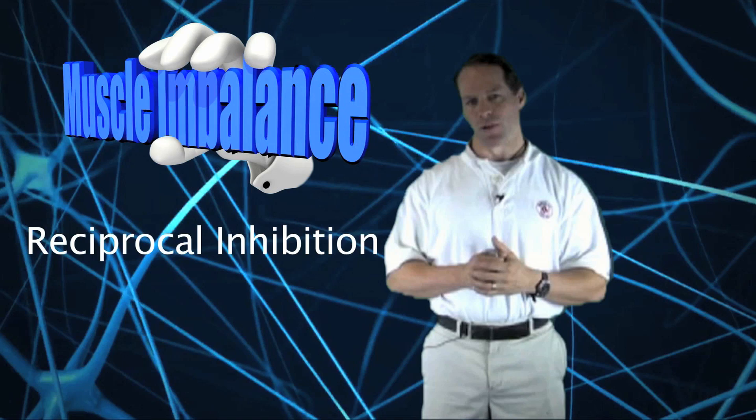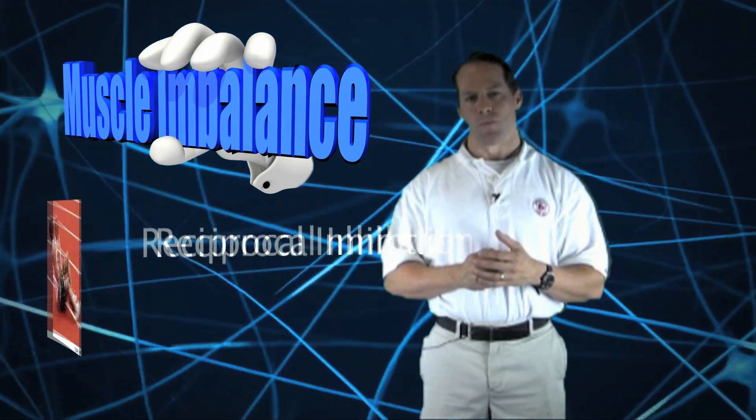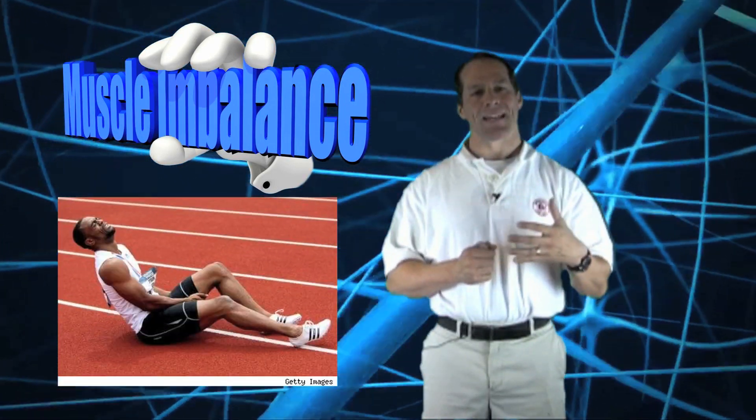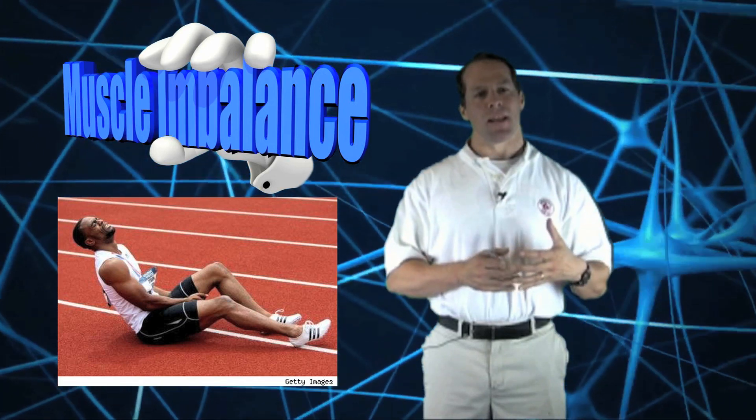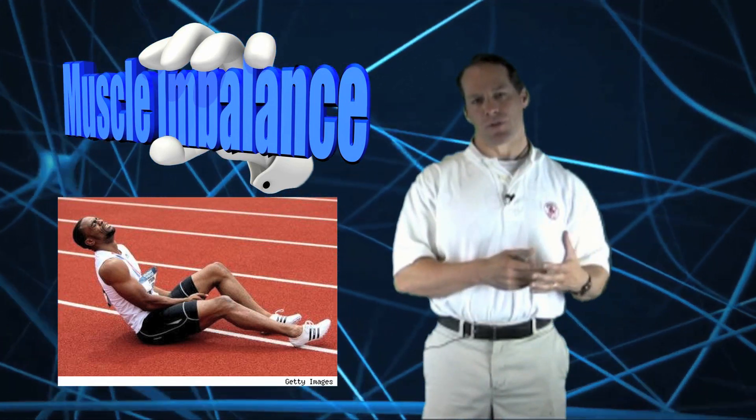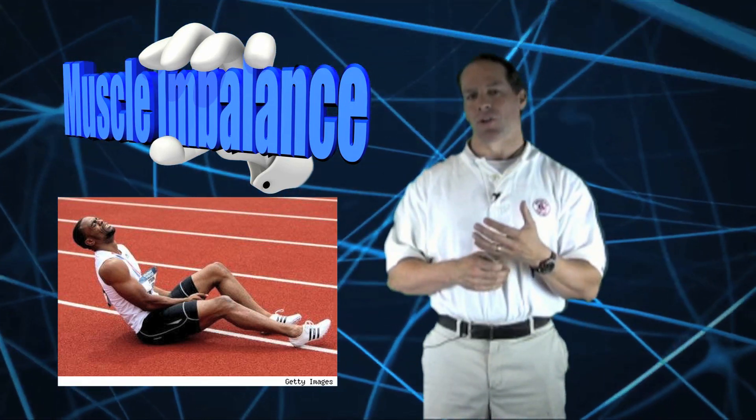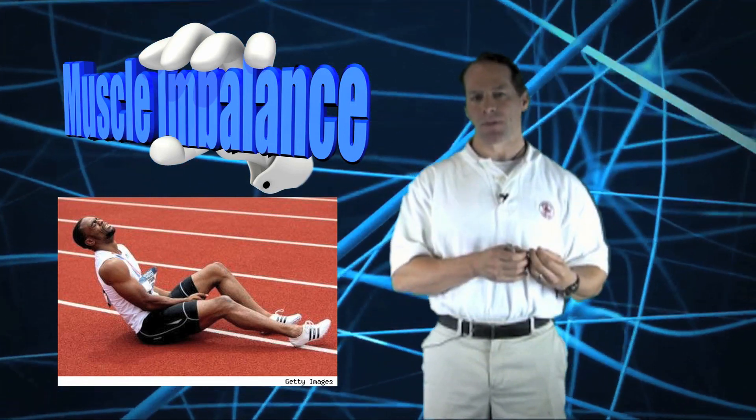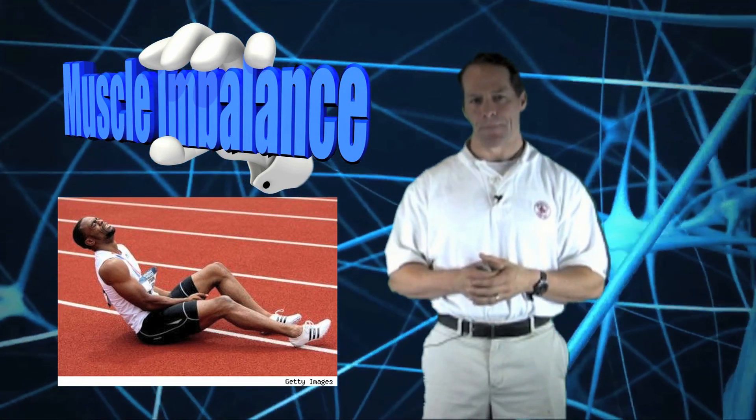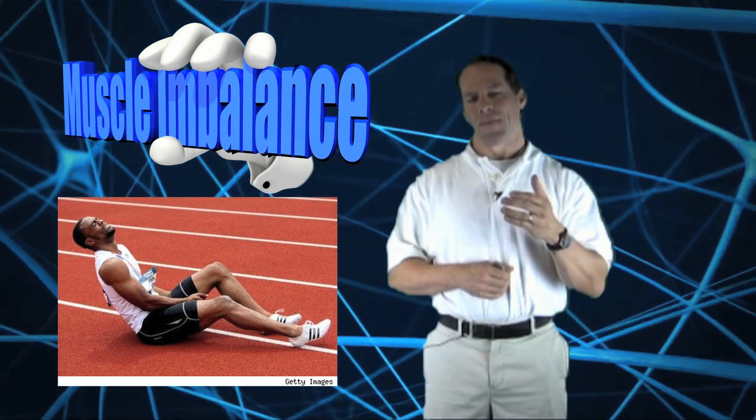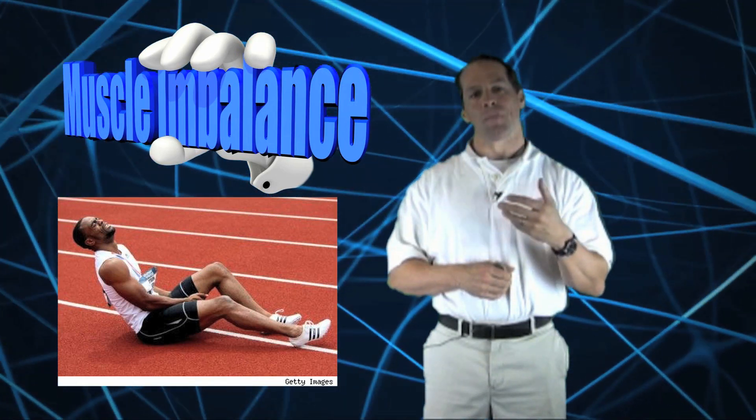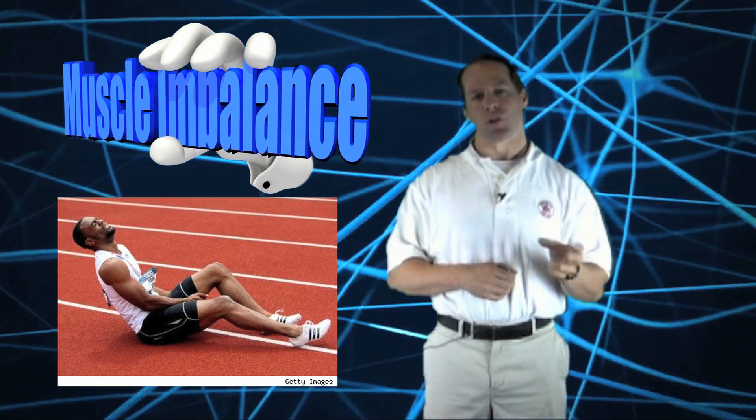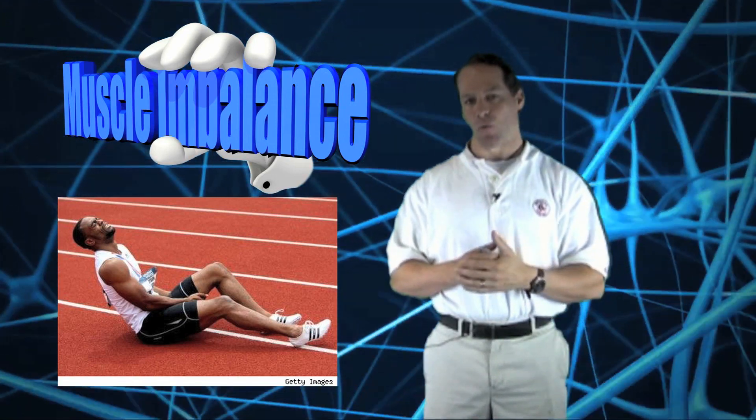A good example of reciprocal inhibition would be a sprinter going at high intensity when suddenly a misfire of the motor units occurs, which then causes contraction of both the quadriceps and hamstrings at the same time. The muscle that is stronger will overpower the lesser muscle, which could lead to a tear in that weaker muscle.